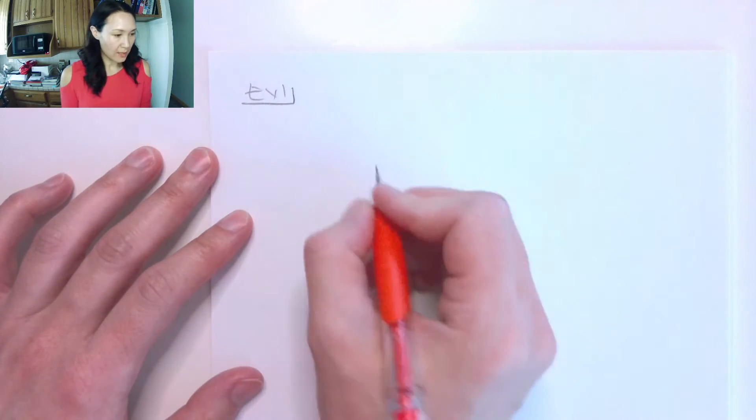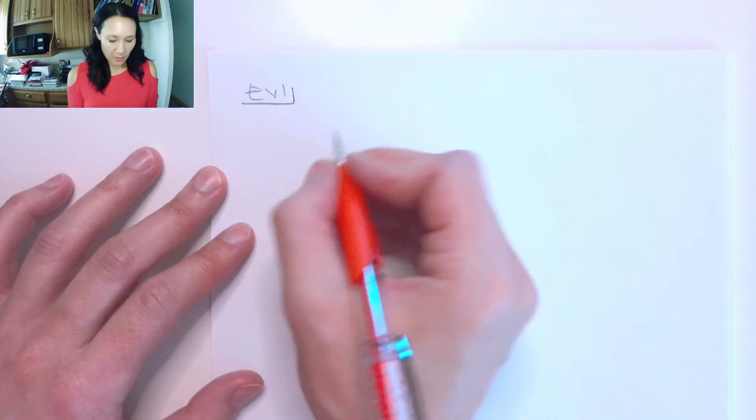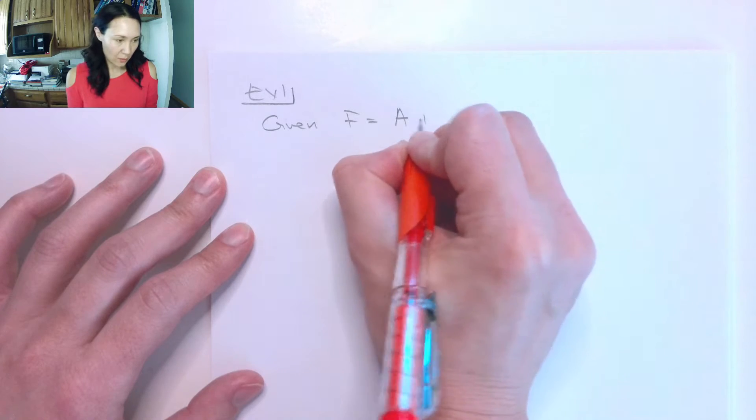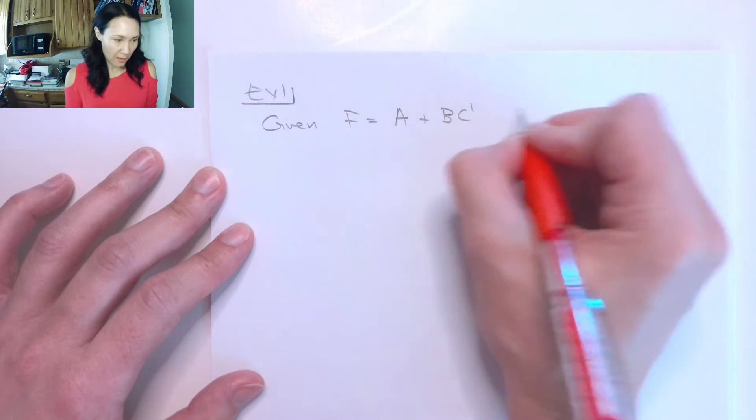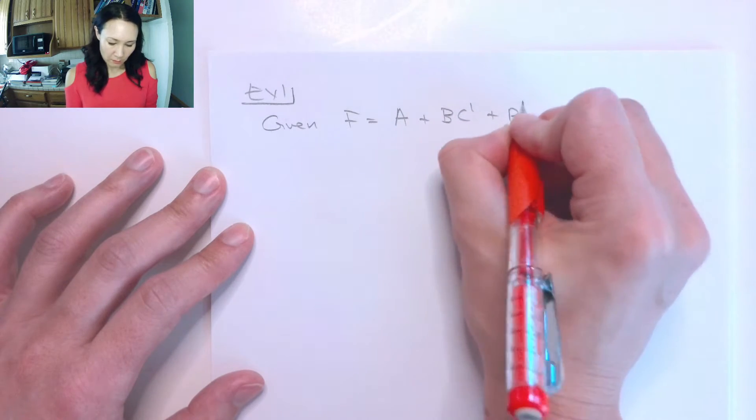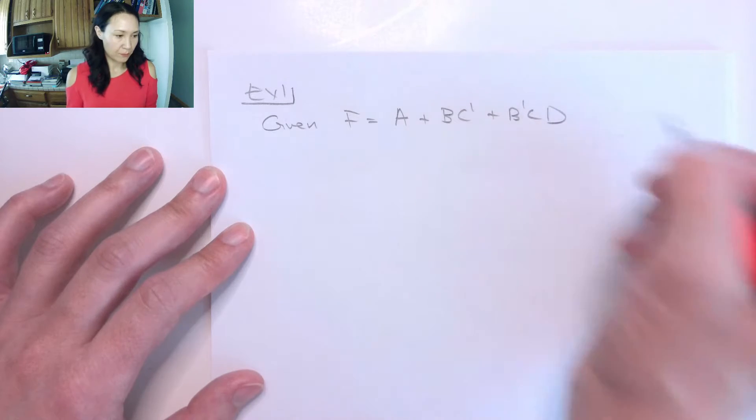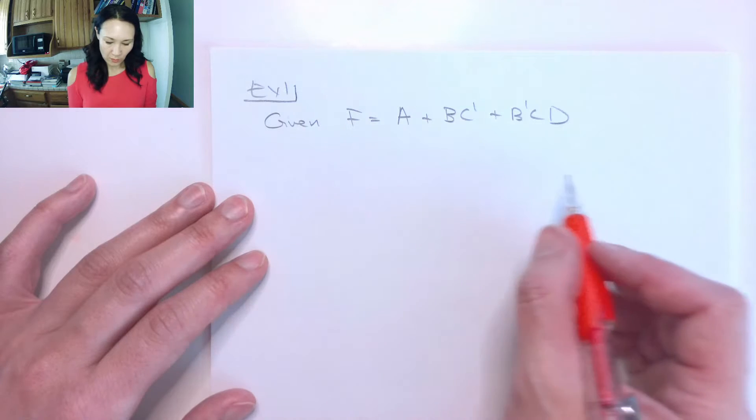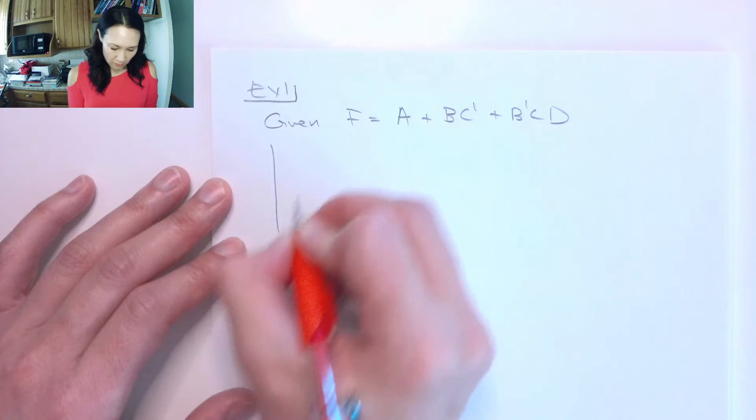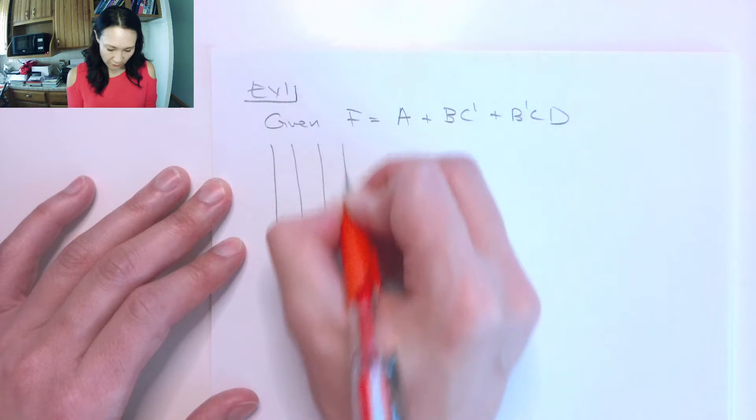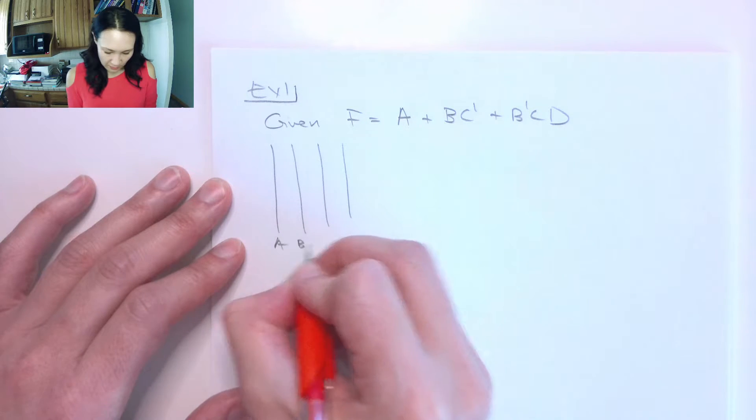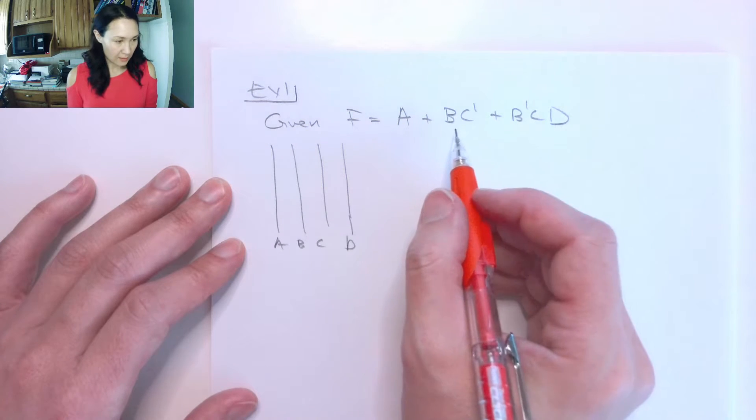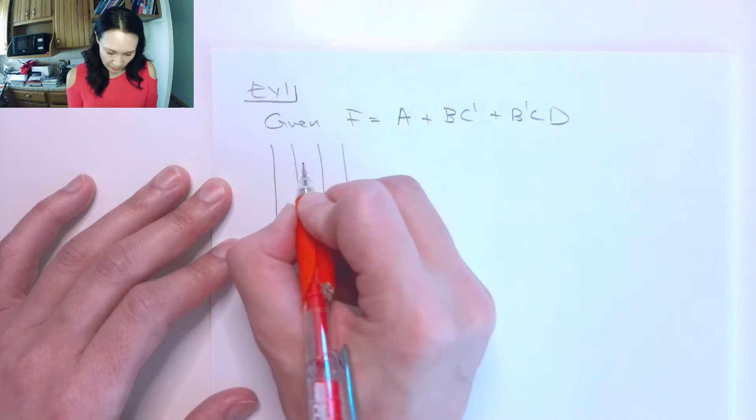So here's example one. Suppose we are given a function F is equal to A OR BC NOT OR B NOT CD. So this is going to correspond to a circuit that looks like this. We have four inputs, A, B, C, and D.